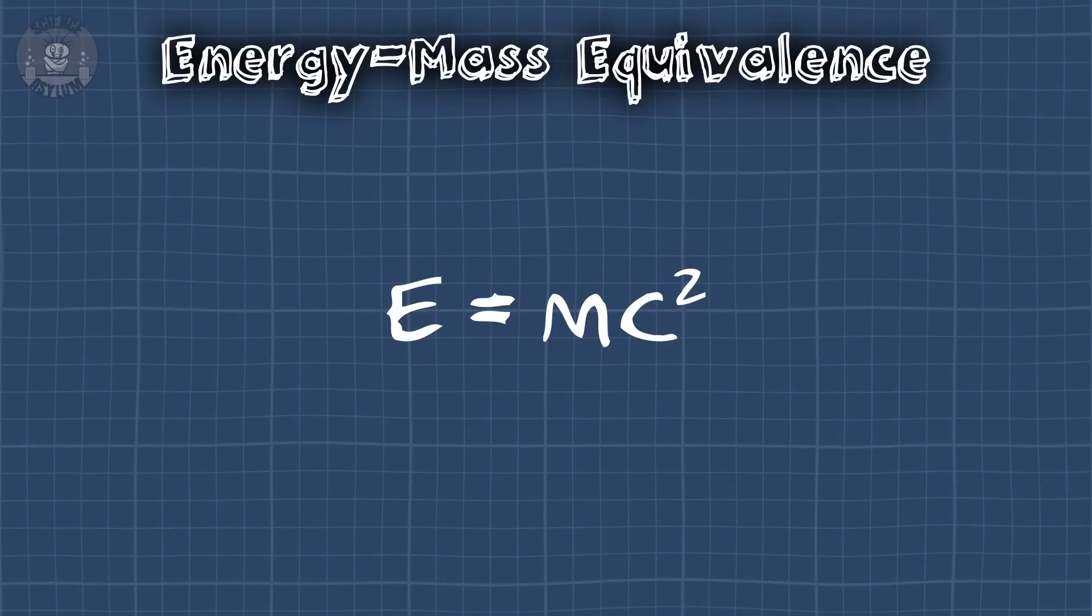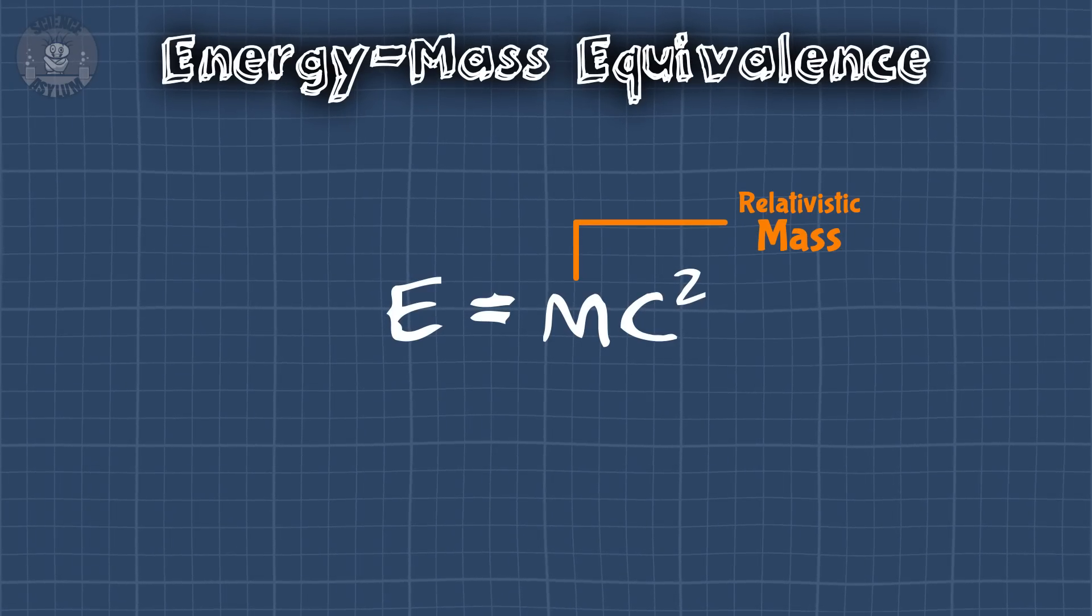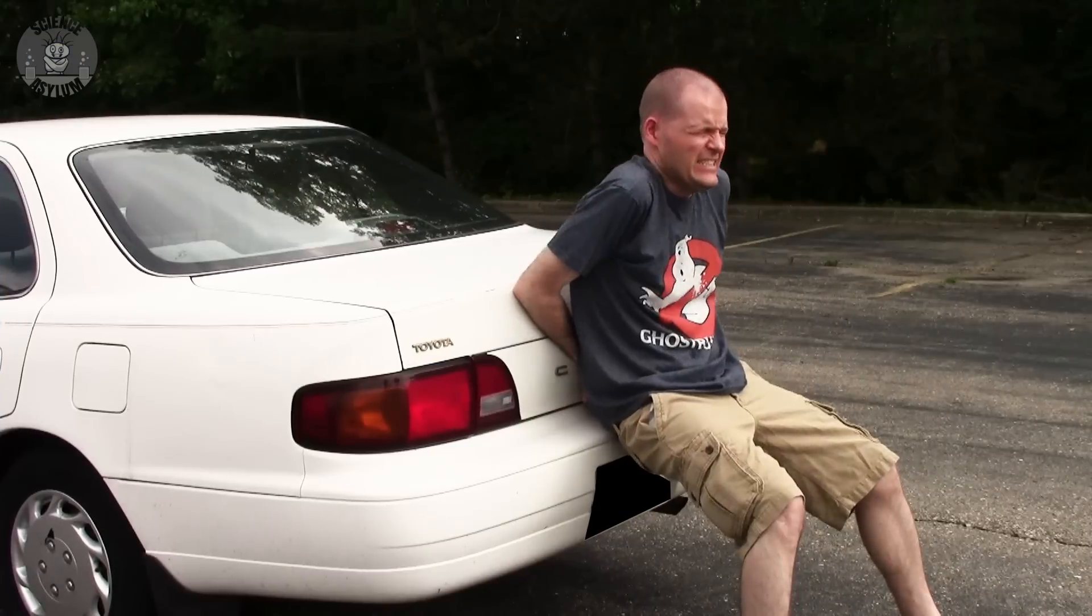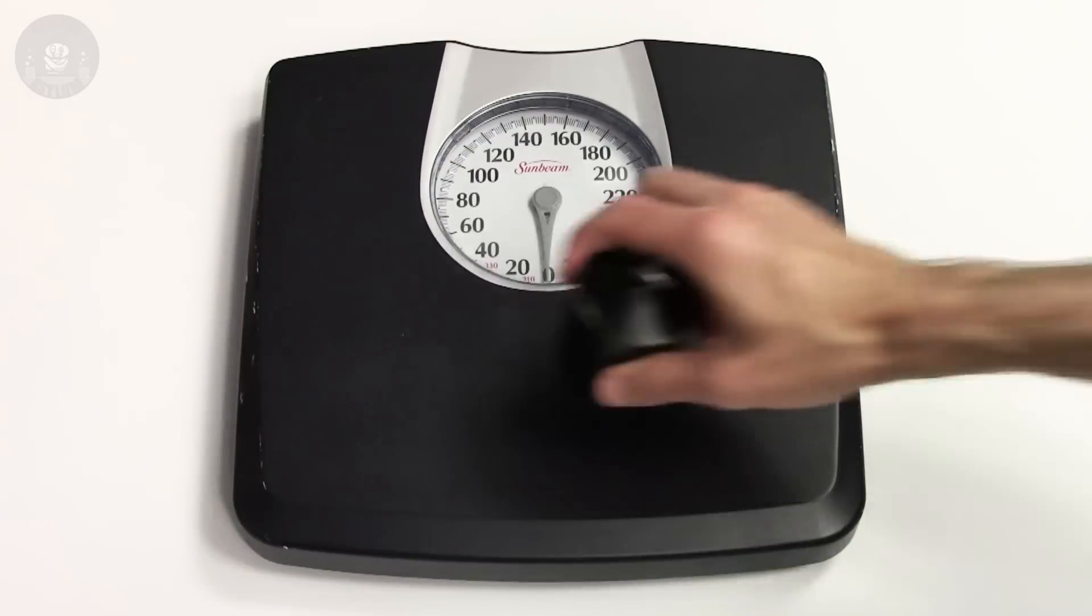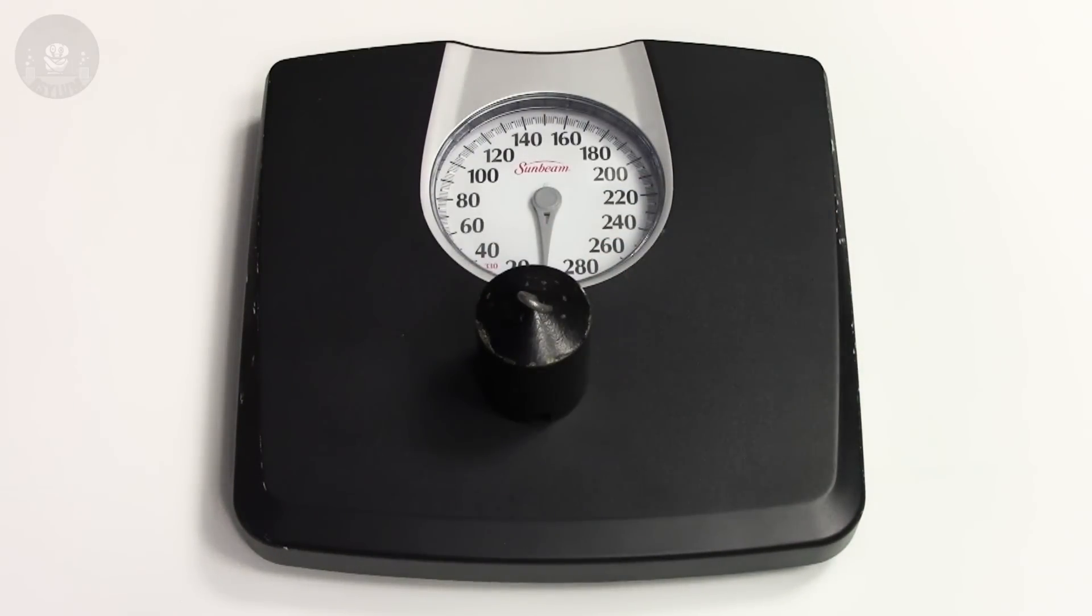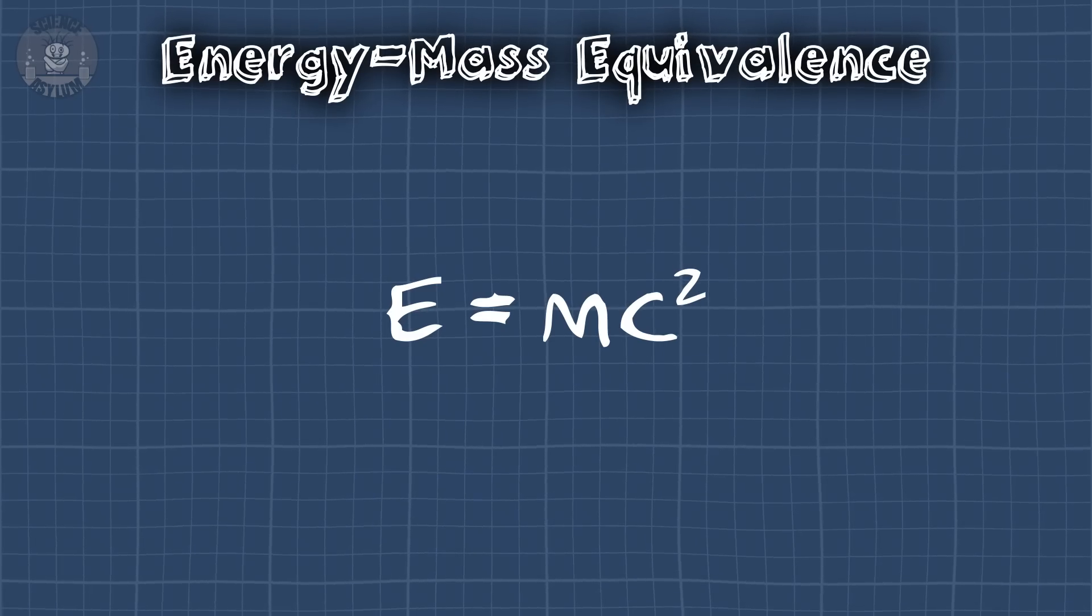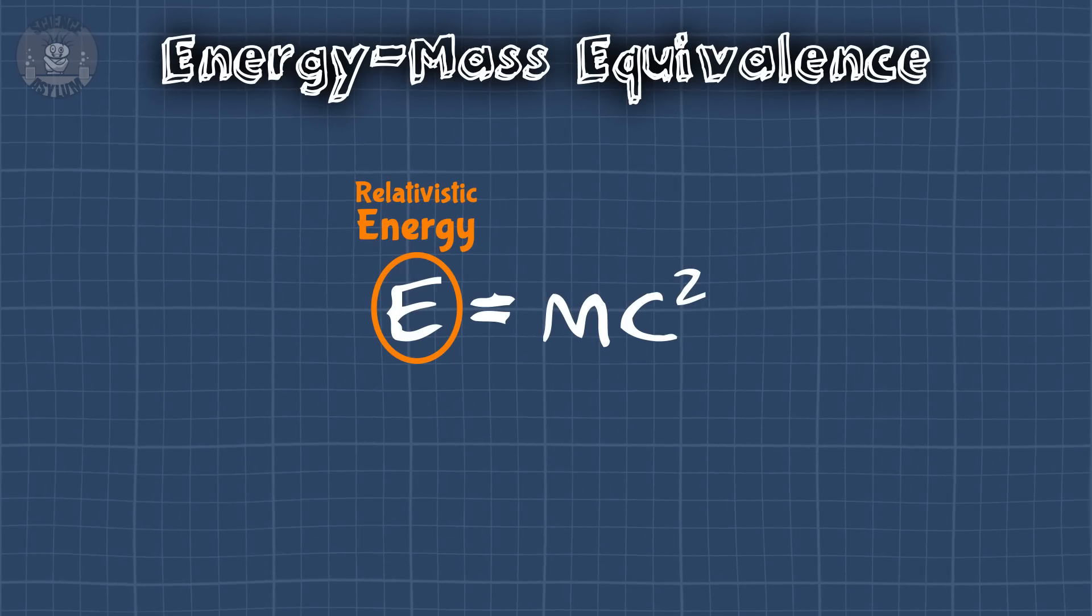To understand this, we need to take a look at the most famous equation of all time. E equals MC squared. This mass here is a relativistic mass. Whether you're trying to accelerate an object or you're weighing it on some kind of scale, you're measuring relativistic mass. In other words, you're measuring its complete energy content.